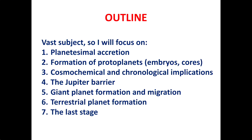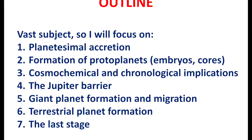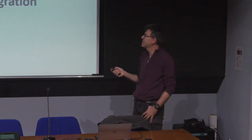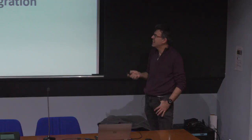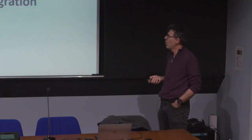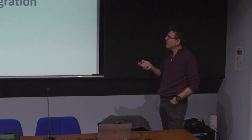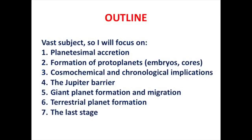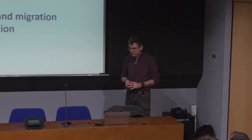I will touch on these subjects only: first, planetesimal accretion, which has been a long-lasting mystery for many decades on which we finally have some breakthroughs but it's still an open research issue; then the formation of protoplanets — the cores of the giant planets or the sub-Earth planetary embryos that eventually gave origin to the terrestrial planets. I'll make a connection with cosmochemical constraints, and then discuss the formation of the giant planets and their migration.